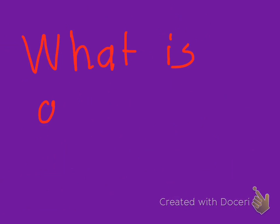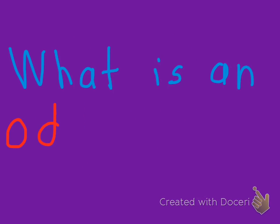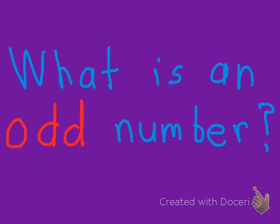So, two kind of driving questions to start our work: number one, think about what is an even number. Put that in your brain and try to think of a few examples. What makes that even number an even number? The second driving question is, what is an odd number? What makes an odd number an odd number?